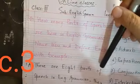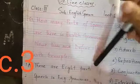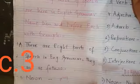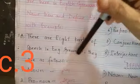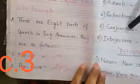You have done in class 2 also, some of them. Now we will explain all 8 parts of speech with their examples. Answer is, how many parts of speech? There are 8 parts of speech in English grammar, they are as follows. Now we will do their names and then we will do their definitions.